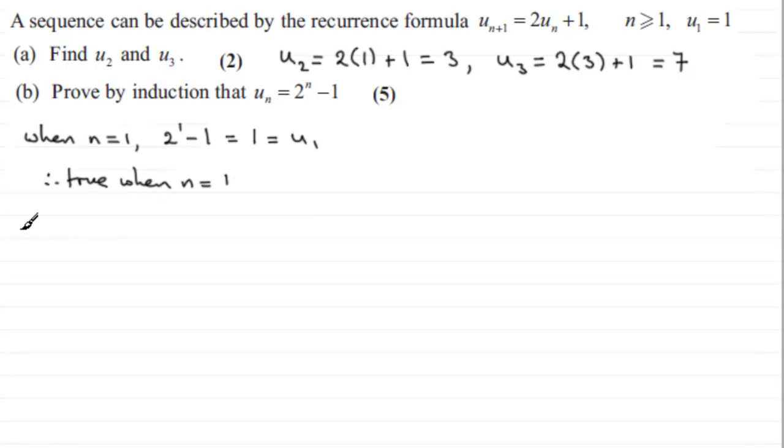Okay, then we go on to say that assume that it's true for some integer, okay, for n equals k. And so therefore, if it is true for n equals k, we're saying or assuming that u subscript k, the kth term in the sequence, is equal to 2 to the power k minus 1.